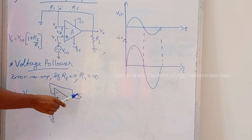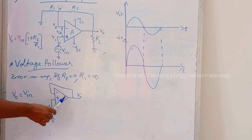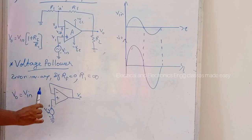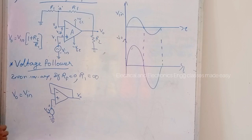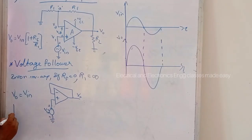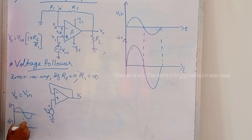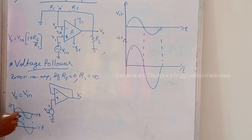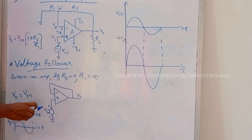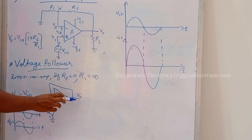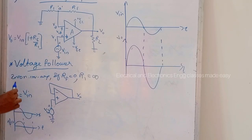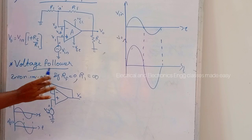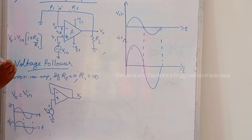In other words, the output voltage follows the input voltage exactly. Hence this circuit is called a voltage follower. The input and output waveforms are equal and in phase. The voltage follower output follows the input both in magnitude and phase.